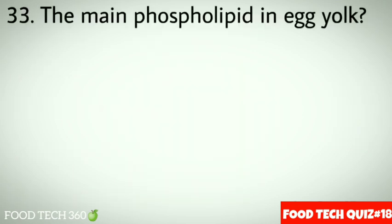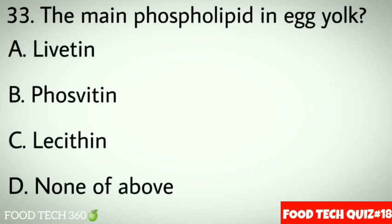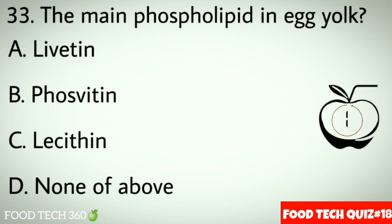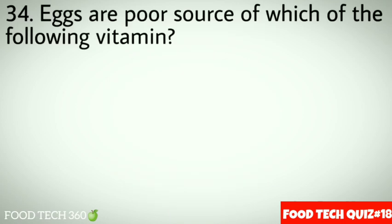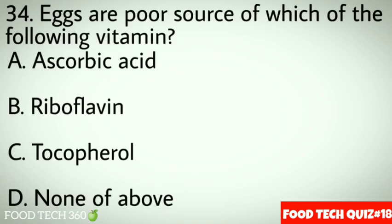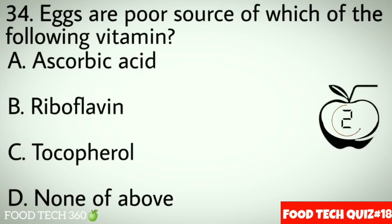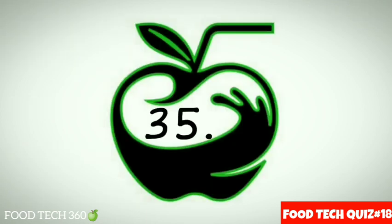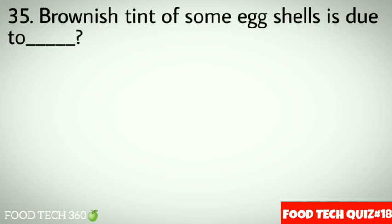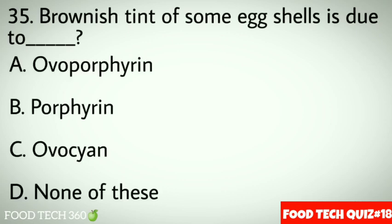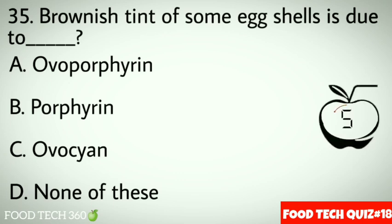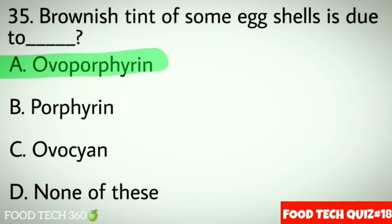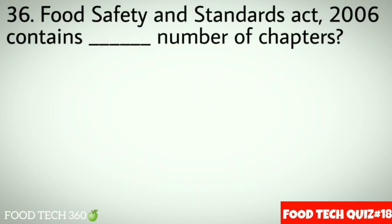Question 34: Eggs are poor source of which of the following vitamins? Options: A. Ascorbic acid, B. Riboflavin, C. Tocopherol, D. None of above. Correct answer: A. Ascorbic acid. Question 35: Brown tint of some eggshells is due to. Options: A. Ooporphyrin, B. Porphyrin, C. Oocyan, D. None of these. Correct answer: A. Ooporphyrin. Question 36: Food Safety and Standards Act 2006 contains dash number of chapters. Options: A. 9, B. 10, C. 11, D. 12. Correct answer: D. 12.